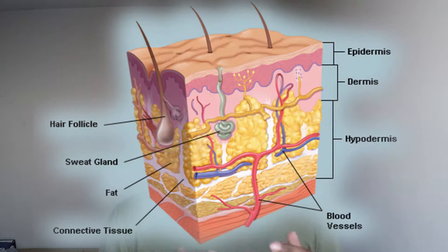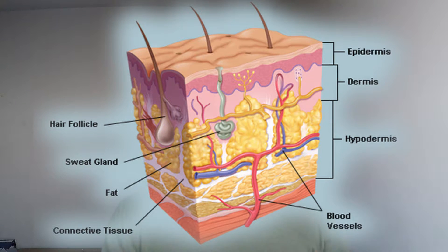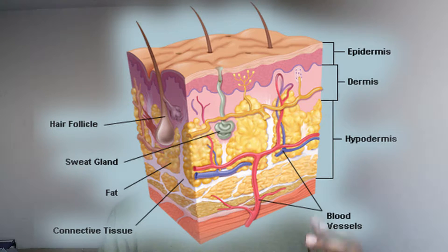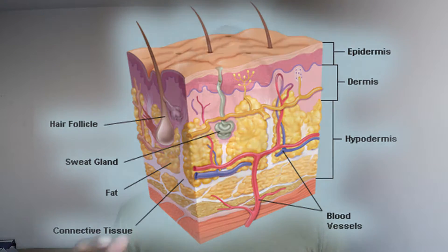The first thing we're going to do is go over how skin is constructed. Our skin is made predominantly of two different layers, the outermost layer being the epidermis, and the underlying layer being the dermis layer. The epidermis is the outermost layer of our skin, the portion that we can actually see. The dermal layer underneath it is actually made predominantly of dense connective tissue.